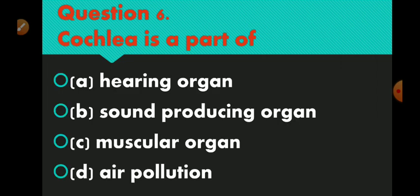Question number 6 is: cochlea is a part of. Option A hearing organ, option B sound producing organ, option C muscular organ, and option D air pollution. Option number A is correct — hearing organ.